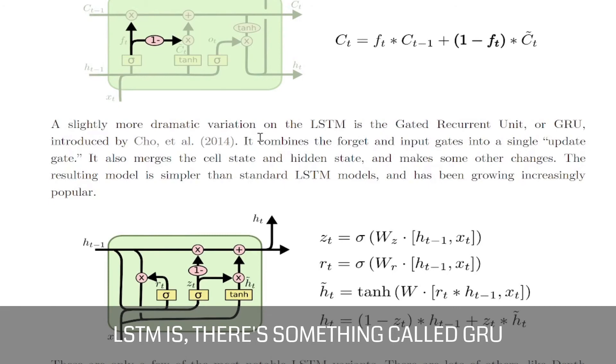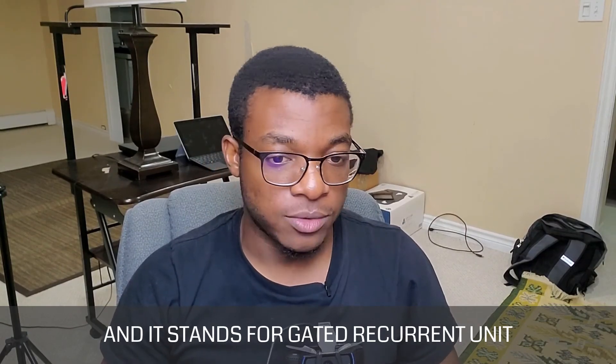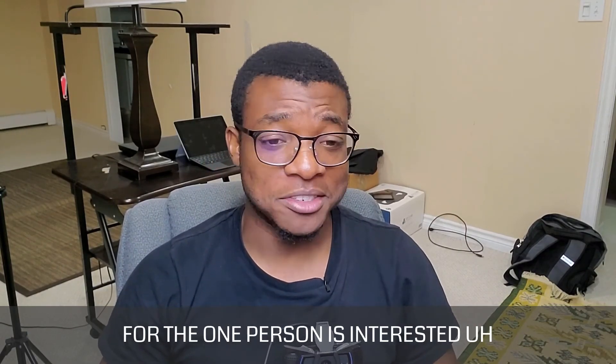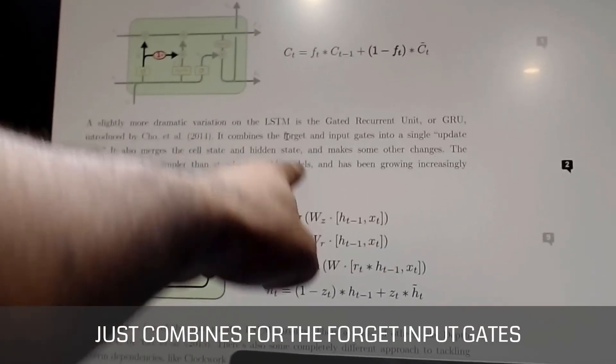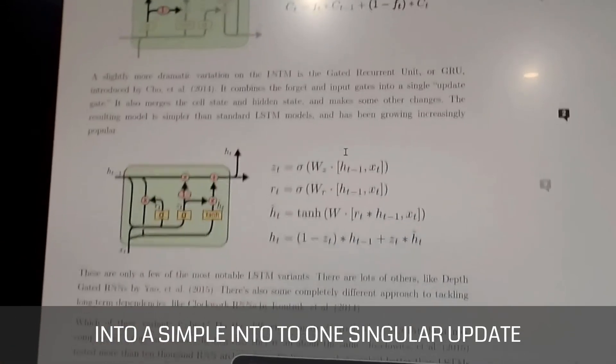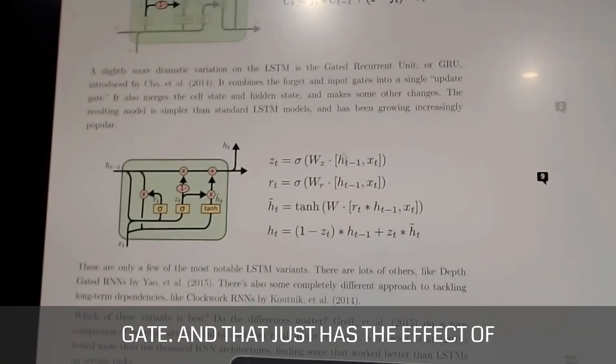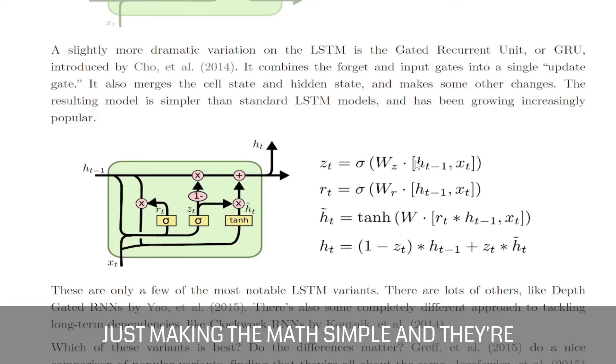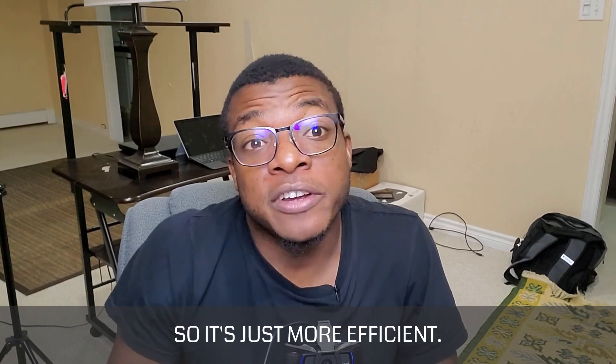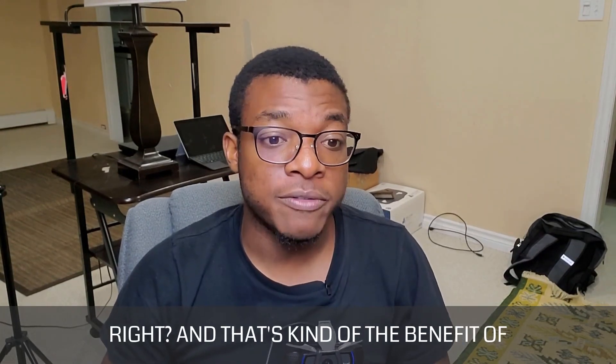And so now that we have kind of the broad overview of what an LSTM is, there's something called a GRU and stands for gated recurrent unit. And essentially what it does is that it just combines the forget and input gates into a simple, into one singular update gate. And that just has the effect of just making the math simple and there are fewer weights to calculate. And so it takes less resources to run and update. So it's just more efficient, right? And that's kind of the benefit of it.